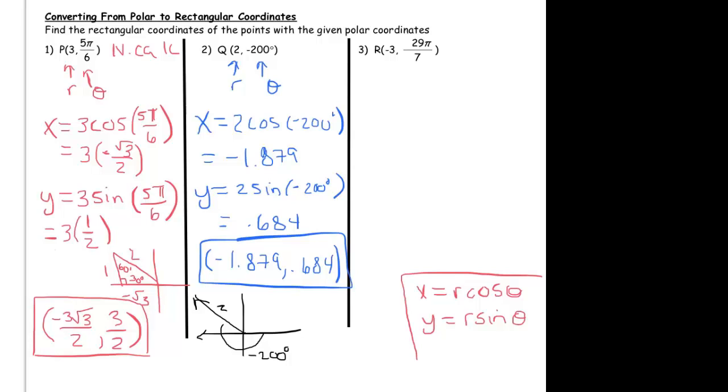So, does it make sense that if you wanted to write that in rectangular form, you'd walk out negative 1.8, and then up 0.68, yeah, right, the quadrant makes sense, right, you'd walk negative and then up. So that's the kind of thing you kind of want to just do to make sure that you check and make sure your answer makes sense.